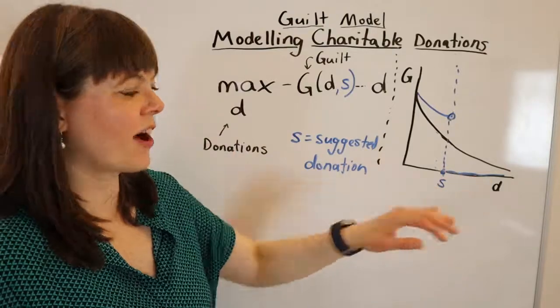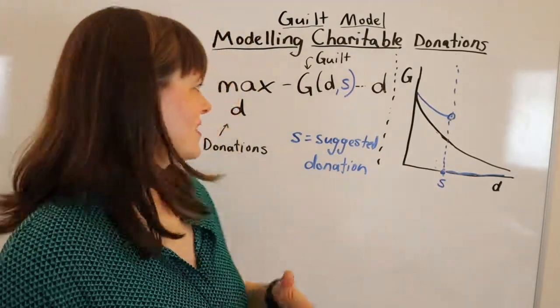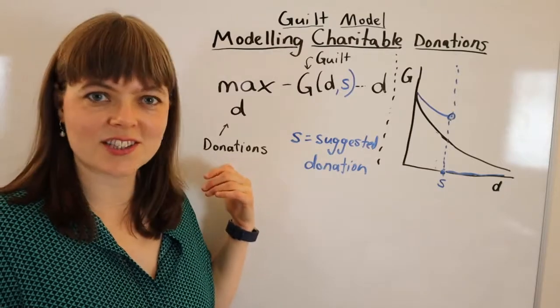Now I'm going to do a deeper analysis of the suggested donation situation along with comparative statics in another video, but I hope this gives you a sense for how you would model guilt in the context of charitable donations.